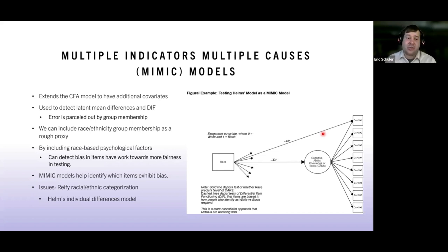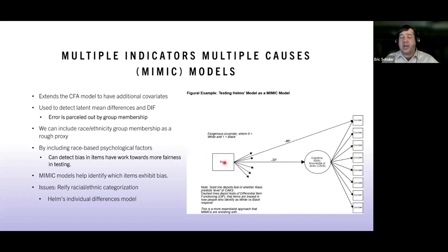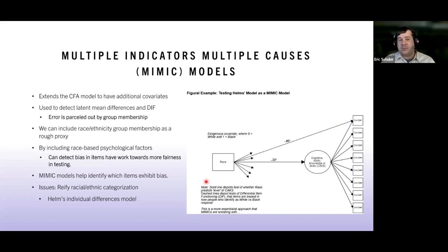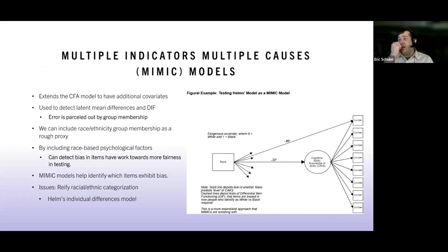This is based on Helms' individual differences model — her work was really at the forefront of equity measurement. A major issue is that it reifies racial and ethnic categorization, which is problematic — it's binary rather than continuous. The steps: start with good model fit, add the grouping variable, look for significant latent mean differences, then check whether any item needs a path drawn to the grouping variable as an indicator of potential bias.